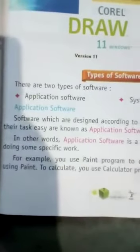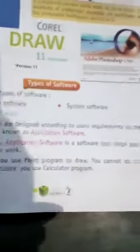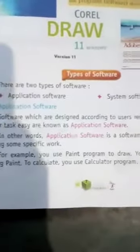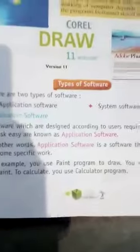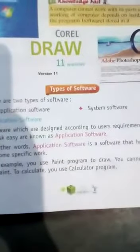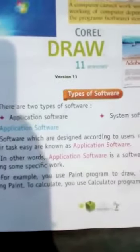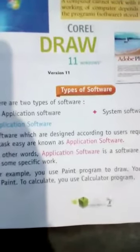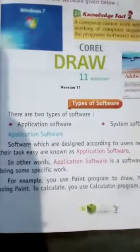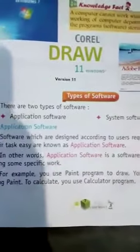Firstly we will read about application software. Software which is designed according to users' requirements to make their task easy is known as application software. In simple words, application software is software that helps you in doing some specific work very easily.